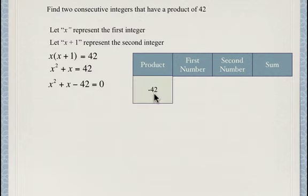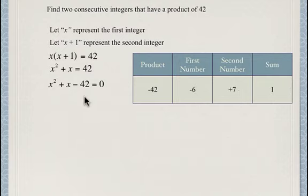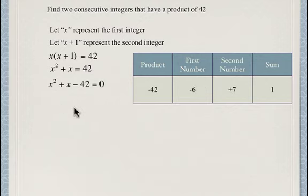Since the two numbers multiply to a negative value and have a sum of positive 1, one number is negative and the other is positive, and they're close in absolute value. The numbers are negative 6 and positive 7, because negative 6 times positive 7 is negative 42, and negative 6 plus 7 is positive 1. So the trinomial factors as (x minus 6)(x plus 7) equals 0.